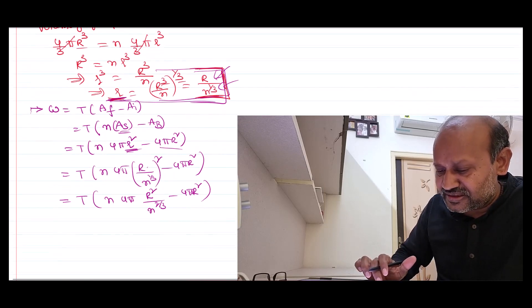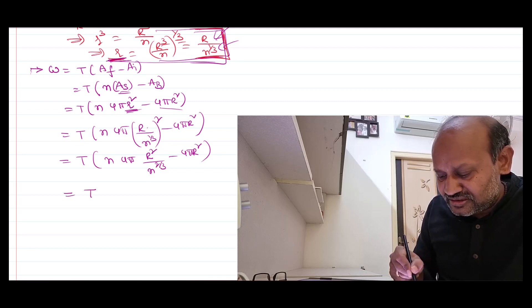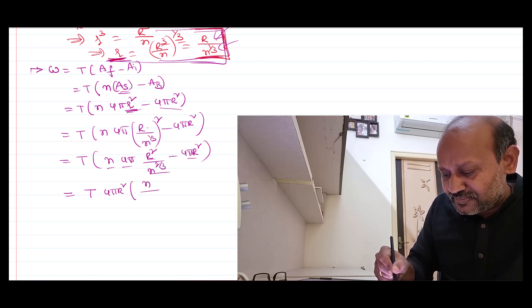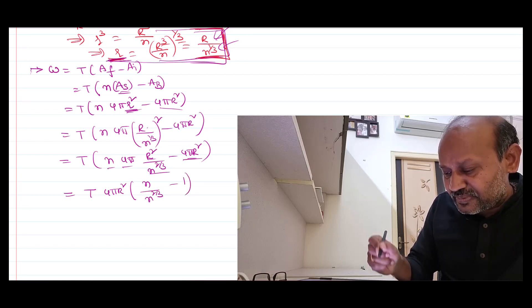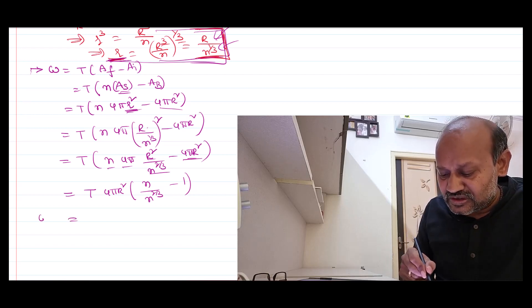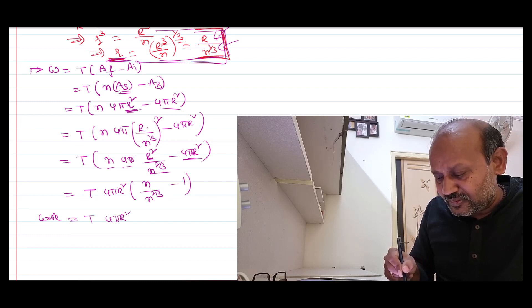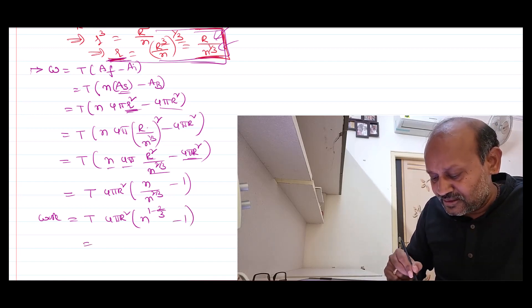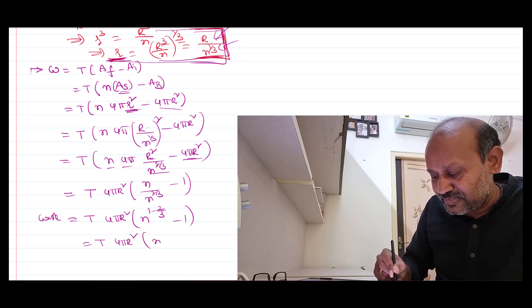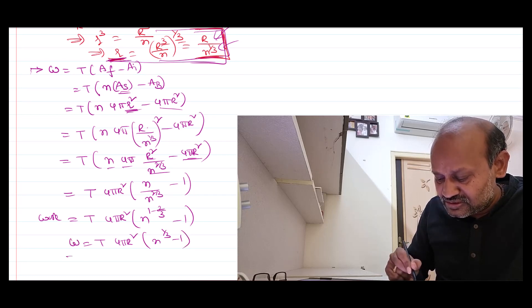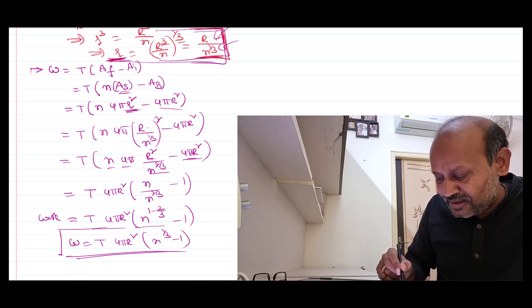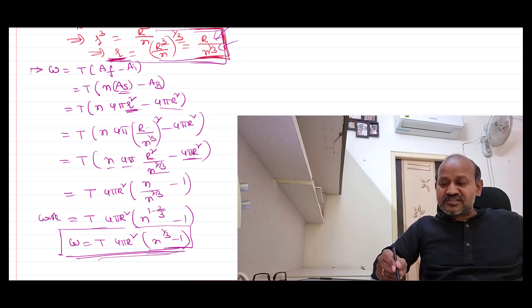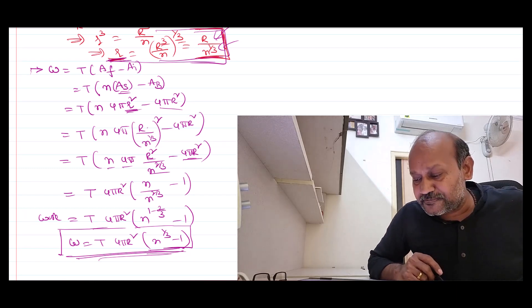So simplifying: work done = T · 4π R² · (n^(1/3) − 1). This is how much work is done when a big drop splits into small drops. It cannot happen by itself — we need to supply work. The answer is T × 4π R² × (n^(1/3) − 1).